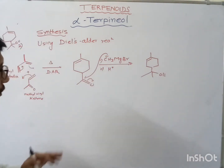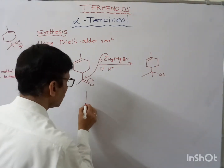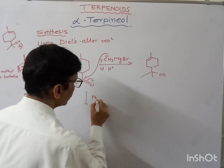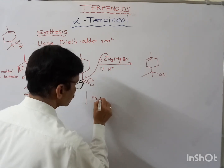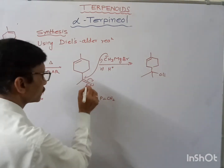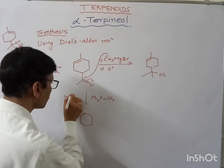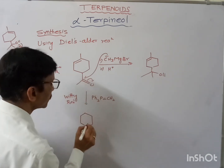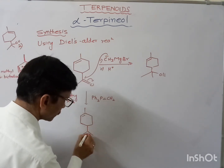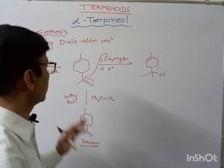The same reaction can also be used to get limonene. If we treat the Diels-Alder product with the Wittig reagent — triphenylphosphine ylide — we can obtain limonene by the Wittig reaction. This is another terpenoid that can be obtained using this approach.